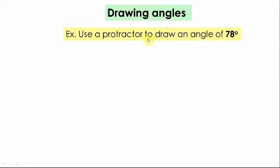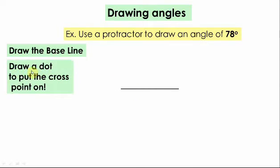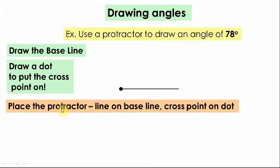Use your protractor to draw an angle of 78 degrees. Firstly, draw the baseline. This is the baseline. Draw a dot to put the cross point on it. This is the vertex of the angle.